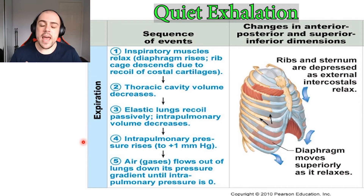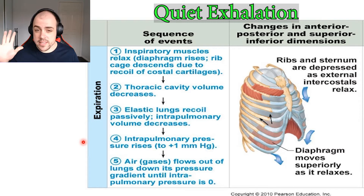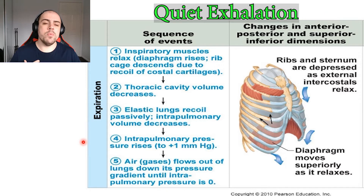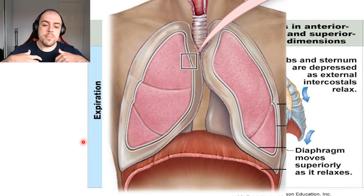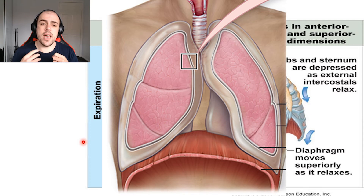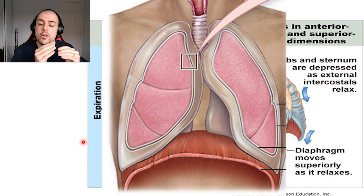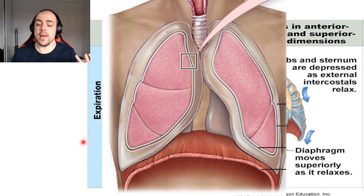When we look at quiet expiration, it's essentially the opposite of inspiration. An important thing to note is lung elasticity. When we want to quietly exhale, the diaphragm and the intercostal muscles of the rib cage are all going to relax. The lungs are very elastic — they're sort of like a balloon. If you blow up a balloon and let it go, the elasticity is going to help push that air out, and we see the same thing with our lungs.